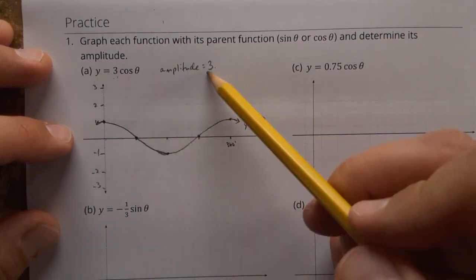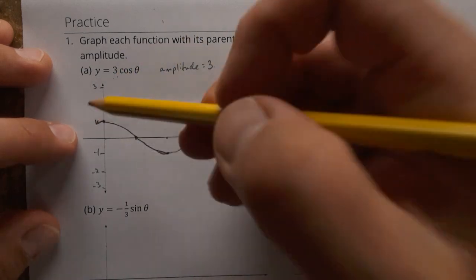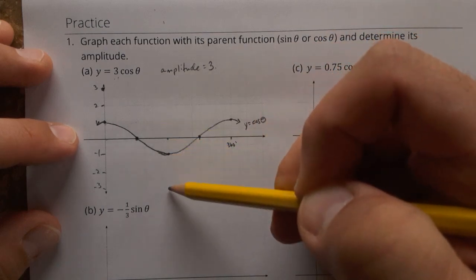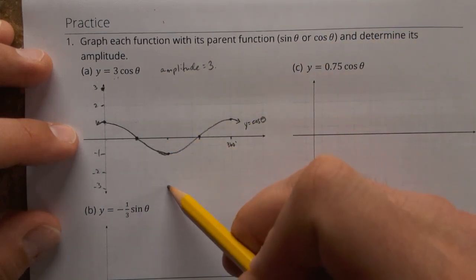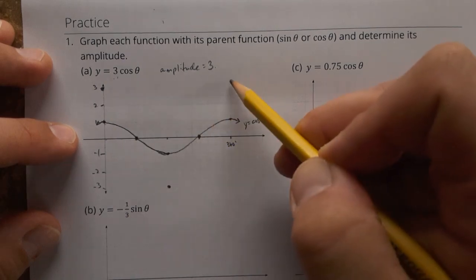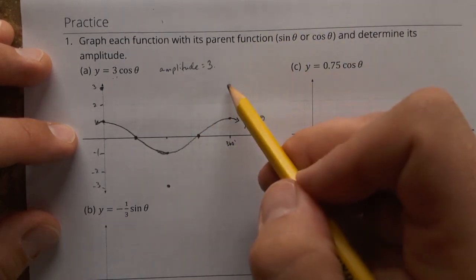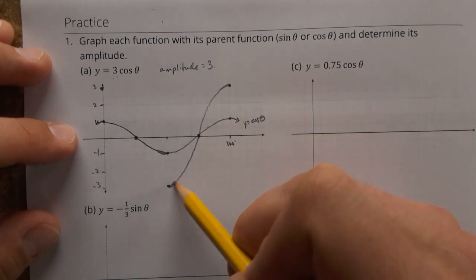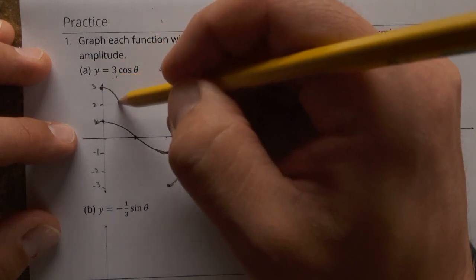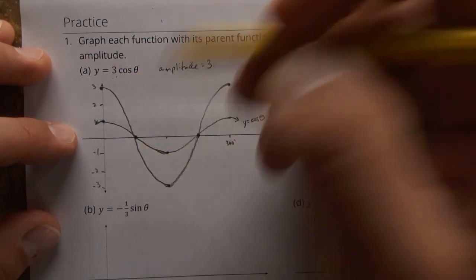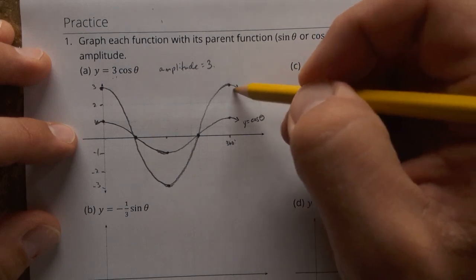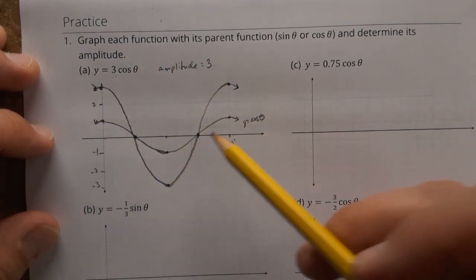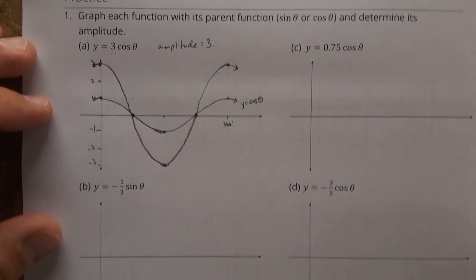Now to draw the amplitude 3 version of this, multiply everything by 3. This 1 becomes a 3. 0 is still 0. Negative 1 becomes negative 3. 0 multiplied by 3. And then last we finish off with that one up there. Function looks the same, but it's stretched vertically. I'll just show the beginnings of those curves on the other side. So amplitude 3, because that number is 3, and everything is stretched vertically.